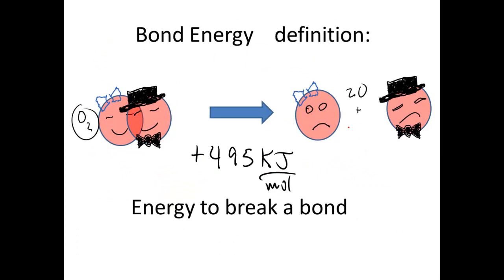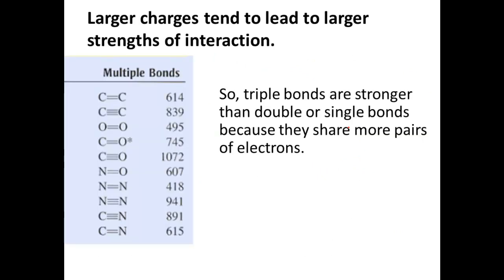So bond energy, by definition, is the energy required to break a bond. So often we have tables that look like this to help us get an idea of the approximate bond energy for different kinds of bonds. And you'll notice here, of course, that the bond energy for a double bond between two carbon atoms is different than the bond energy for three covalent bonds between two carbon atoms.